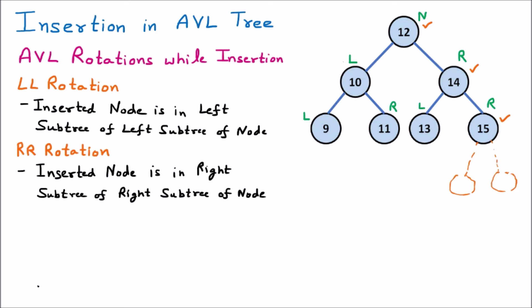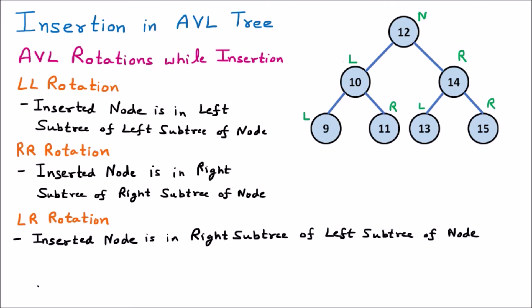Next is LR rotation, which means left-right. The inserted node is in the right subtree of the left subtree of the node. Suppose we have node N, and its left subtree is 10, with a right subtree of 11. If we insert a node here or here — right of left — and the tree becomes unbalanced, that is called LR rotation. LR rotation should be applied to balance the tree.